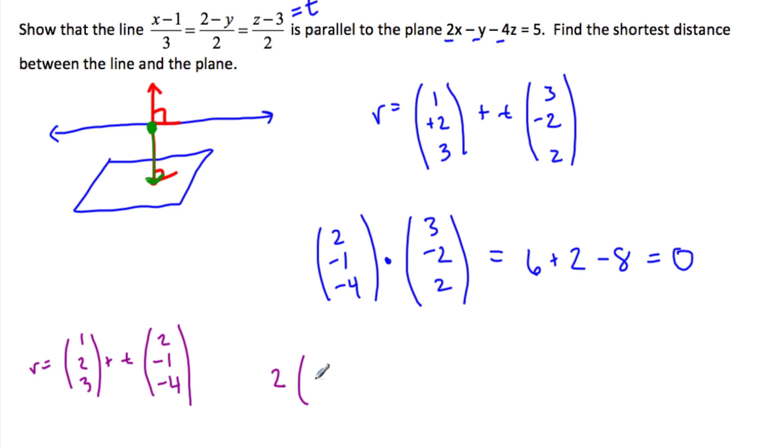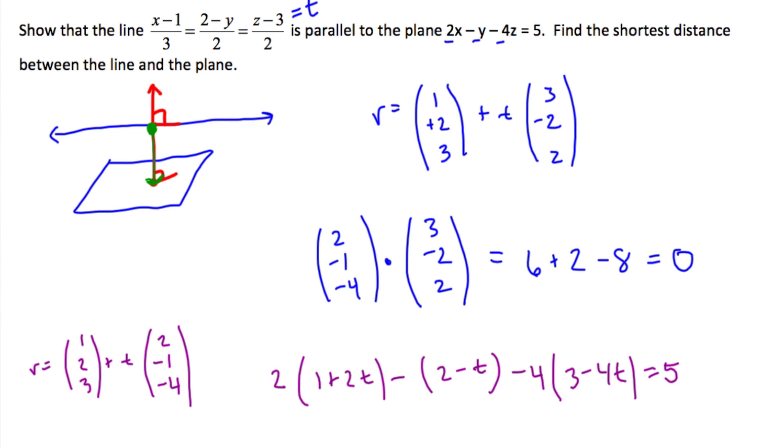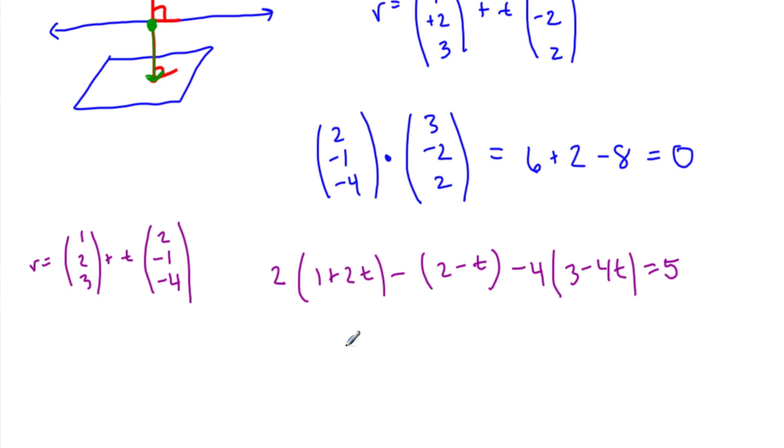So I have two, x, which is one plus two t, minus two minus t, taking this value of y, two minus t, minus four times z, and z is three minus four t, and this is all equal to five. Two plus four t, distributing this two, minus two plus t, minus twelve plus sixteen t is equal to five.